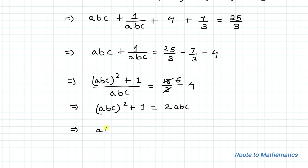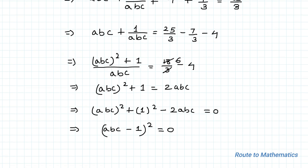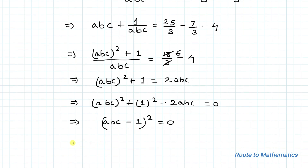We recognise this as a perfect square: (abc − 1)² = 0, by applying the algebraic identity (a − b)² = a² − 2ab + b². Therefore abc − 1 = 0, which implies abc = 1 is the answer.